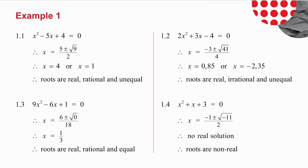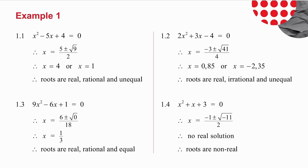In 1.2, when I use the quadratic formula, I get that x is 0.85 or x is minus 2.35. Both of those numbers are real. They are irrational and they are unequal.